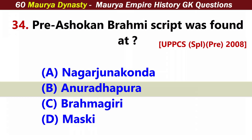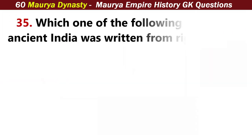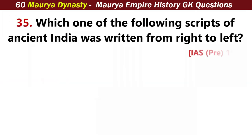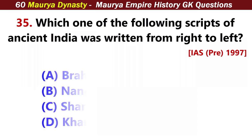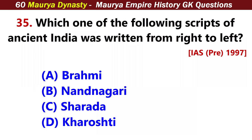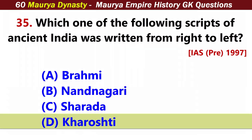Answer B: Anuradhapura. Which one of the following scripts of ancient India was written from right to left? Answer D: Kharosthi.